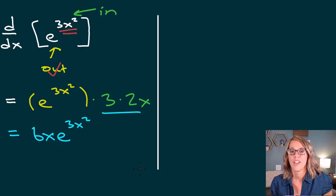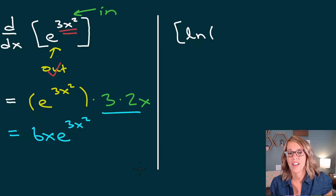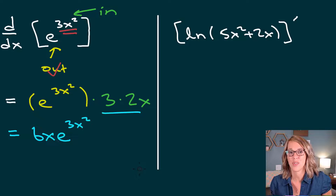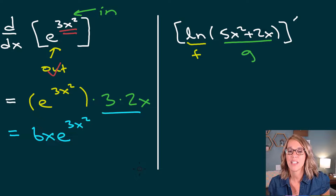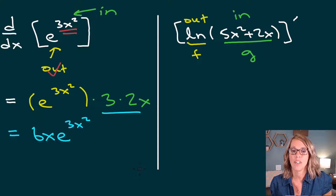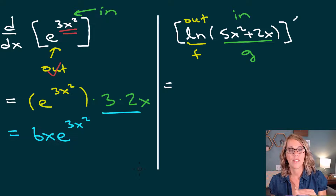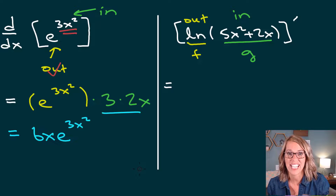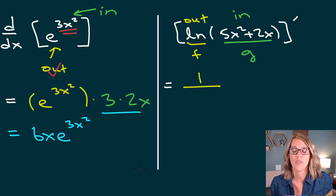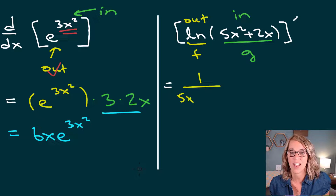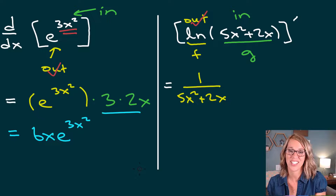Let's do a natural log example. I'm going to do the derivative of the natural log of 5x squared plus 2x, using prime notation. My outer function is the natural log, and my inner function is 5x squared plus 2x. The derivative of the natural log of anything is 1 over whatever's on the inside. So taking that first derivative, it's going to be 1 over 5x squared plus 2x — the derivative of the outer function with respect to the inner. The outer function is now done.